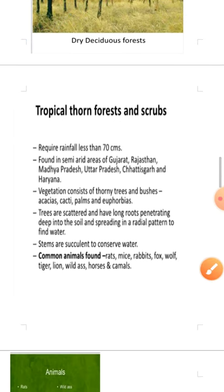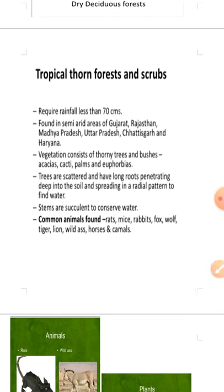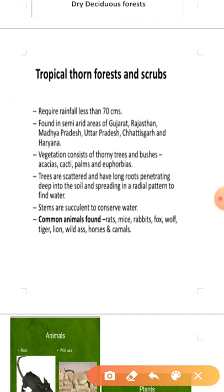The next kind of forest is tropical thorn forest or scrubs. They require less than 70 centimeters of rainfall. So to revise: tropical evergreen requires more than 200 cm, tropical deciduous 70 to 200 cm, and tropical thorn forest below 70 centimeters of rainfall.